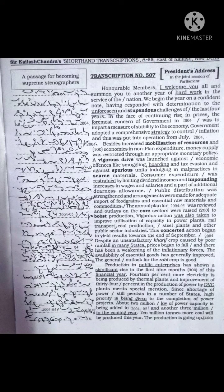Vigorous action was also taken to improve utilization of capacity in power plants, rail transport, coal production, steel plants and other public sector industries. This concerted action began to yield results towards the end of September 2004.